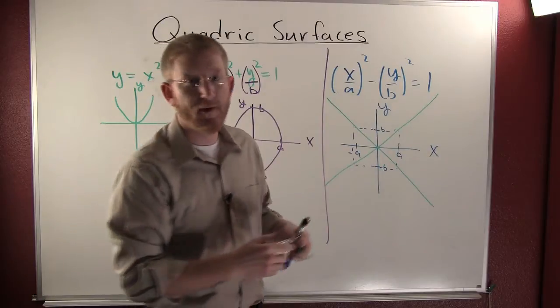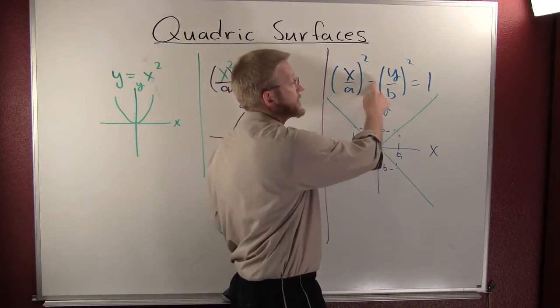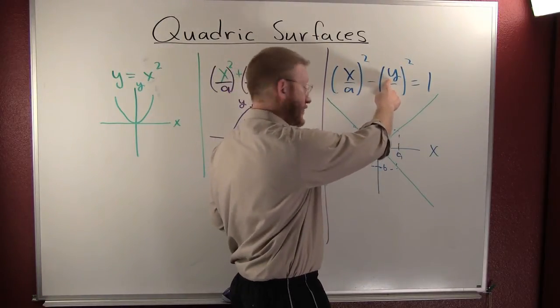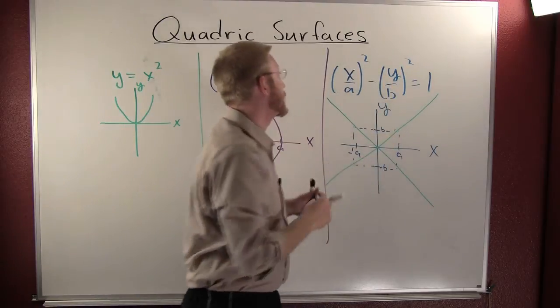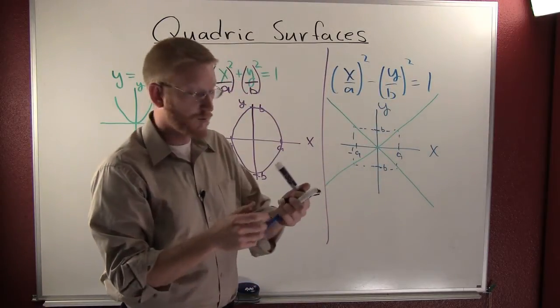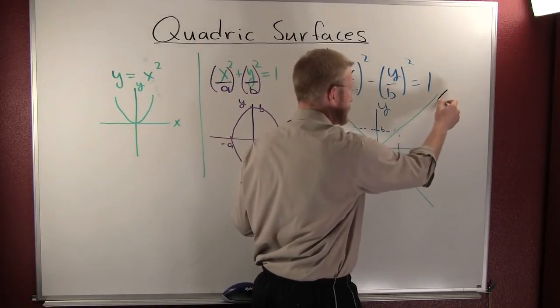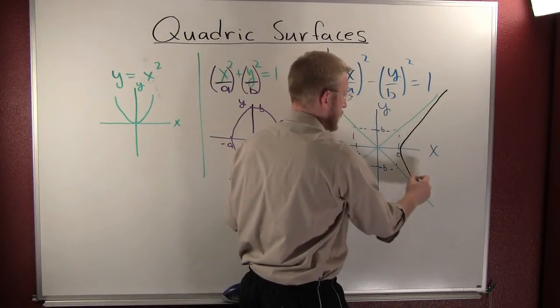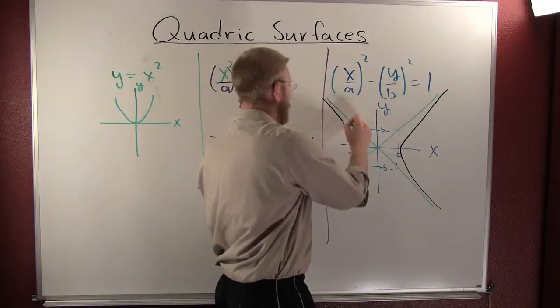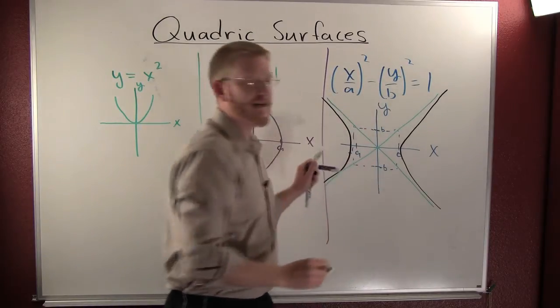And then I determine which way my hyperbola opens up. It opens away from the minus sign. The minus sign is on your y variable. So it opens away from y. So your hyperbola looks like that guy.